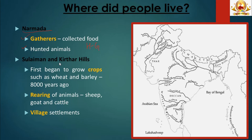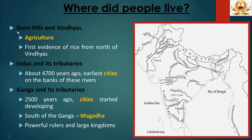Moving on to Suleiman and Kirthar hills, some of the areas where men and women first began to grow crops such as wheat and barley about 8,000 years ago are located here. People also began rearing animals like sheep, goat and cattle. We get traces of early village settlements from this region, as domestication of plants and animals made it necessary to stay in one place for longer. Agriculture also developed in the Garo hills and Vindhyas. About 4,700 years ago, the earliest cities flourished on the banks of the Indus — the Harappan or Indus Valley Civilization.